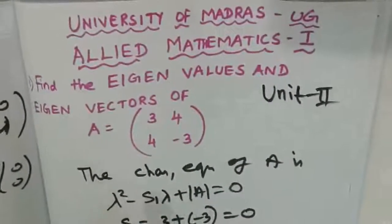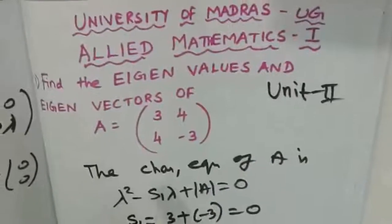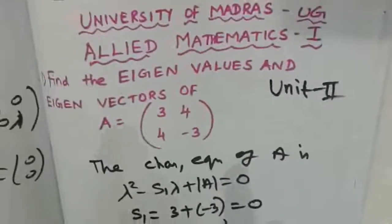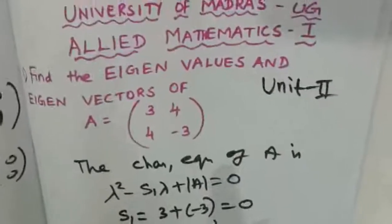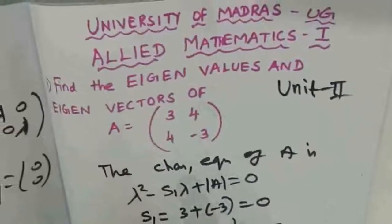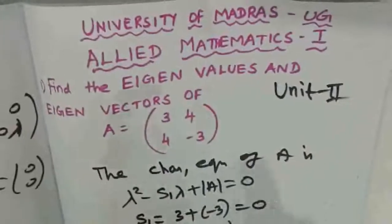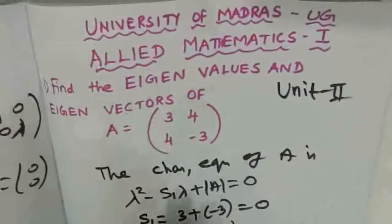Hello students, we are going to find an Aligned Mathematics paper. In Unit No. 2, we have a two by two matrix. We will repeat the same problem.